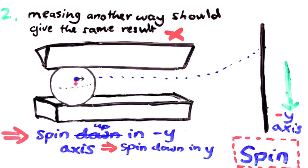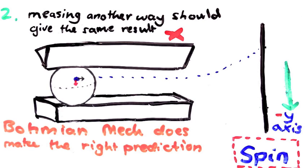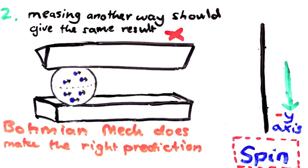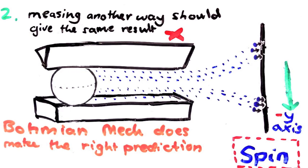Notice that I'm not saying Bohmian mechanics makes the wrong experimental prediction, because in the second case, we also expect that half the electrons deflect up and half deflect down. And that's exactly what happens. Bohmian mechanics can give you the right predictions on any Stern-Gerlach experiment.